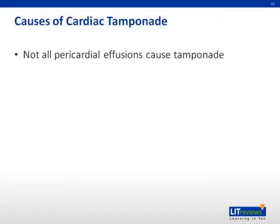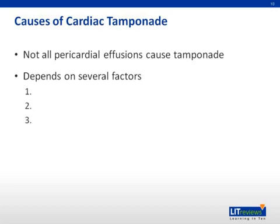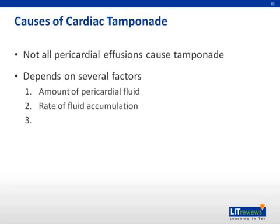It is important to emphasize that not all pericardial effusions cause cardiac tamponade. In fact, most effusions do not cause tamponade. Factors that make a pericardial effusion more likely to cause tamponade include: one, a large volume of fluid; two, a short period of time over which that fluid accumulates; and three, a pericardial membrane that is very stiff and will not stretch much as the fluid accumulates.